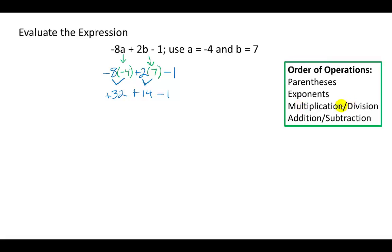We have no more multiplication or division, so we're now going to do addition-subtraction, working from left to right. So we have 32 plus 14. That gives us a positive 46. We bring down -1.